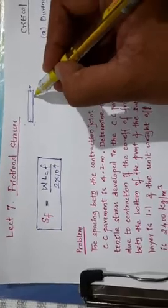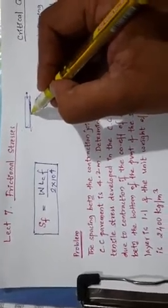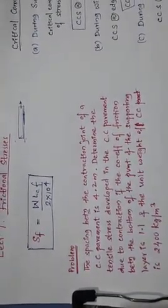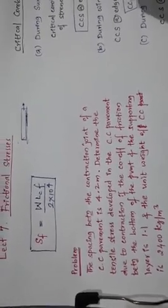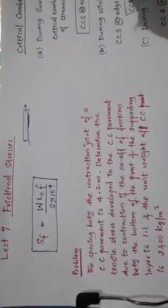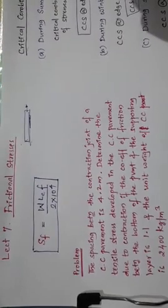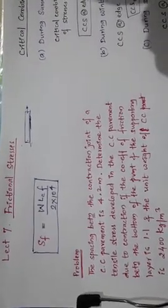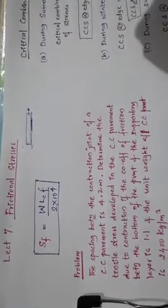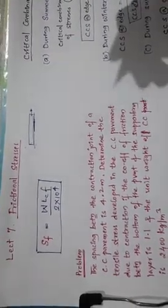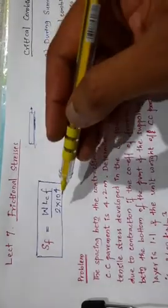For example, if the expansion is moving in one direction, the frictional stresses try to hold it. This induces frictional stress in the bottom fiber of the cement concrete pavement. The stresses in the slab resulting due to this phenomenon vary with the slab length. The process of contraction of the CC slab and the development of tensile stresses is given by this formula.